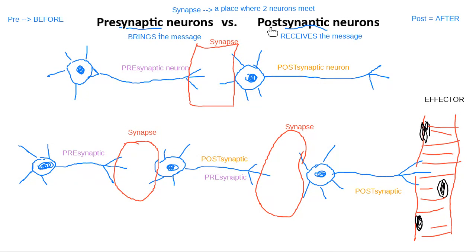On the homework, please pay attention to which synapse we're talking about, because I do give you a chain of neurons. Make sure if I'm talking about synapse number one or synapse number two, you read the questions carefully.